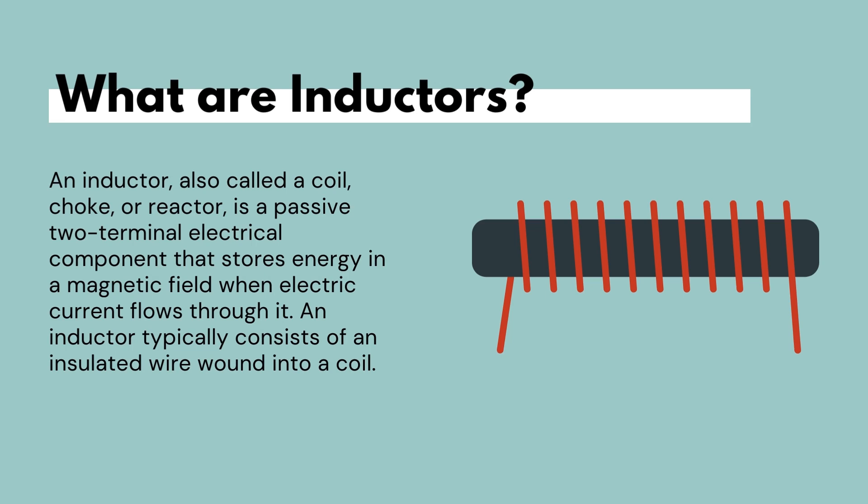So without further ado, let's get started and talk about what inductors are. An inductor is basically a passive two-terminal electrical component that stores energy in a magnetic field when current flows through it. Just like a capacitor stores electrical charge on its plates, inductors store energy in a magnetic field, and it does that through resisting changes in current. An inductor is typically an insulated wire that is wound into a coil.